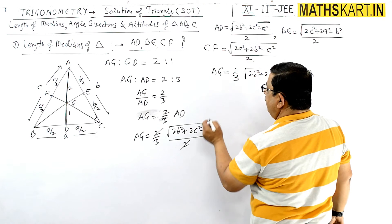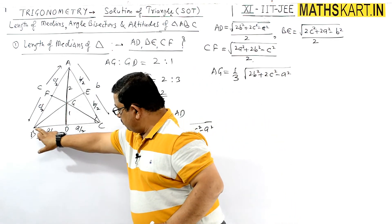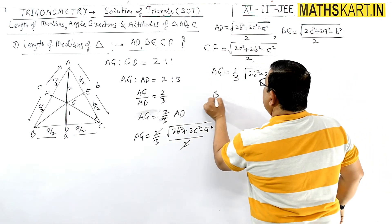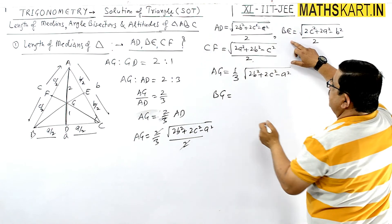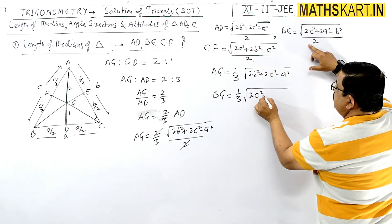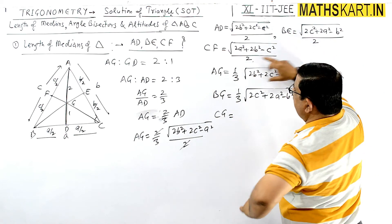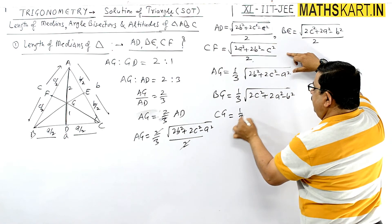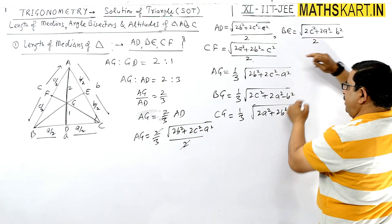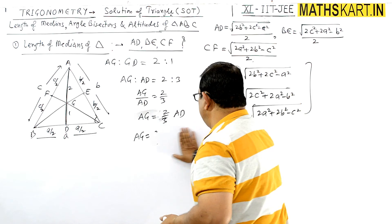Similarly, we can find BG and CG. BG = (1/3)·√(2c² + 2a² − b²), where the pattern is the same: the side against B becomes the single negative term. And CG = (1/3)·√(2a² + 2b² − c²). So all three lengths AG, BG, and CG can be found this way.